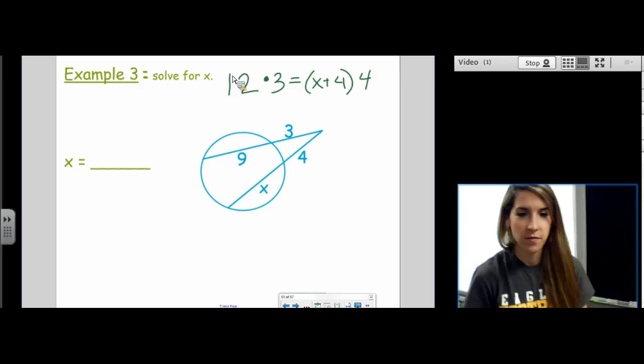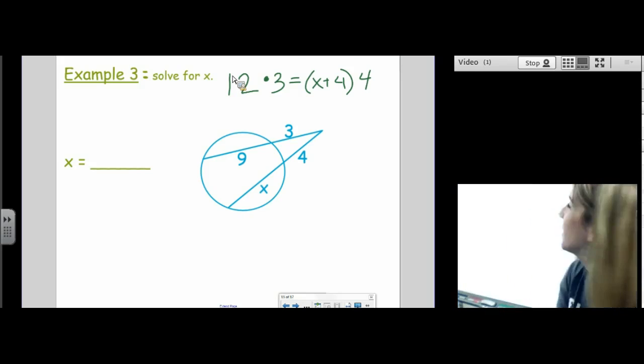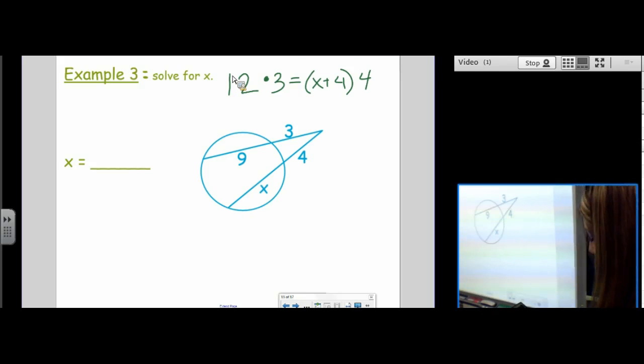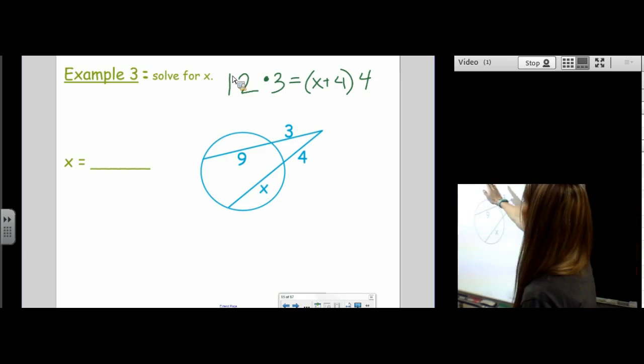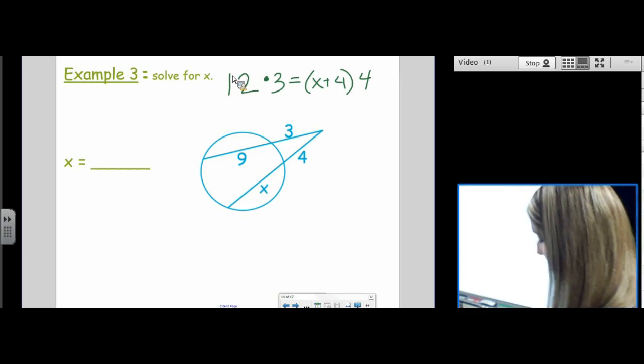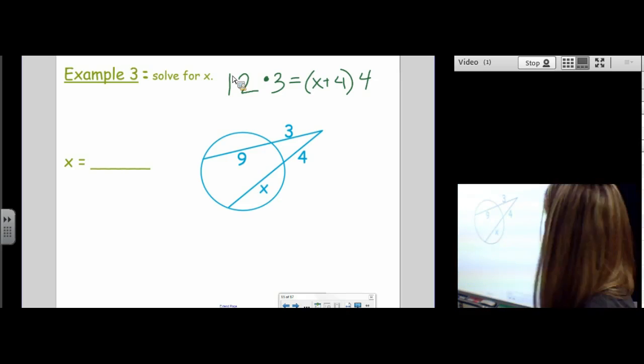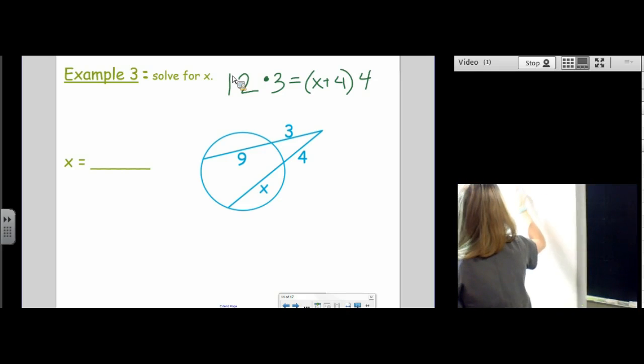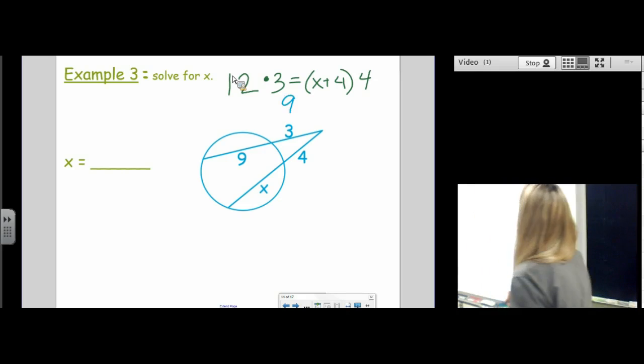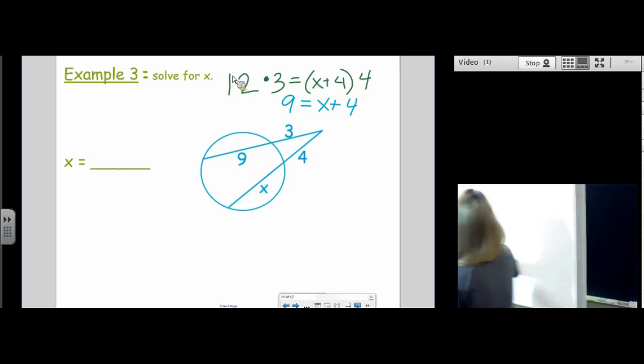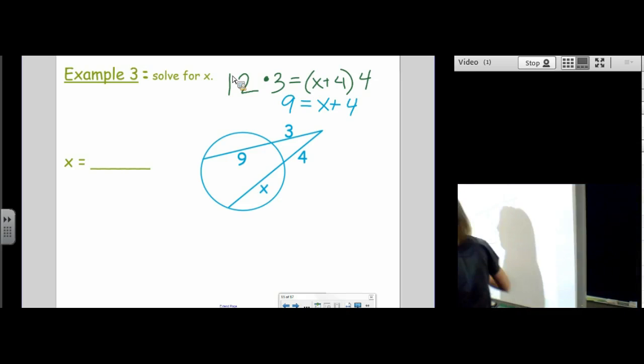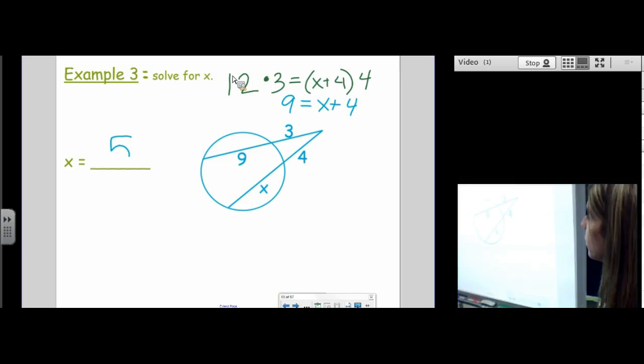Let's try it. Be careful. Whole times external equals whole times external. Are we good? So, we totally got this. Like I said last time, you can distribute the four, but I would just divide by four. So, we have 12 times three. We're going to divide by four. And so, we have nine equals x plus four. And then we subtract four from both sides. So, x is five. Whole times external equals whole times external.